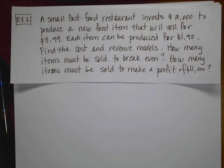similar situation. A small fast food company is going to invest $10,000 to produce a new food item that will sell for $3.99. Each item can be produced for $1.90. Find the cost and revenue model. How many items must be sold to break even? This one says, how many items must be sold to make a profit of $12,000?